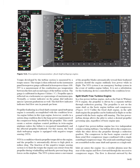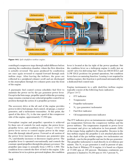The compressor in the basic engine consists of three axial flow compressor stages combined with a single centrifugal compressor stage, assembled on the same shaft and operating as a single unit. Inlet air enters the engine via a circular plenum near the rear of the engine and flows forward through the successive compressor stages. The flow is directed outward by the centrifugal compressor stage through radial diffusers before entering the combustion chamber, where the flow direction is actually reversed. The gases produced by combustion are once again reversed to expand forward through each turbine stage. After leaving the turbines, gases are collected in a peripheral exhaust scroll and discharged to the atmosphere through two exhaust ports near the front of the engine. A pneumatic fuel control system schedules fuel flow to maintain the power set by the gas generator power lever.